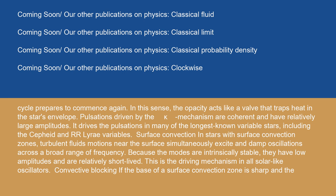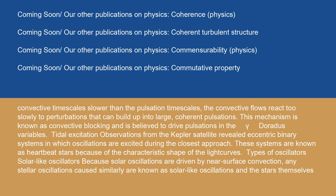Surface convection: in stars with surface convection zones, turbulent fluid motions near the surface simultaneously excite and damp oscillations across a broad range of frequency. Because the modes are intrinsically stable, they have low amplitudes and are relatively short-lived. This is the driving mechanism in all solar-like oscillators. Convective blocking: if the base of a surface convection zone is sharp and the convective timescales are slower than the pulsation timescales, the convective flows react too slowly to perturbations that can build up into large, coherent pulsations. This mechanism is known as convective blocking and is believed to drive pulsations in the gamma Doradus variables. Tidal excitation: observations from the Kepler satellite revealed eccentric binary systems in which oscillations are excited during the closest approach. These systems are known as heartbeat stars because of the characteristic shape of the light curves.